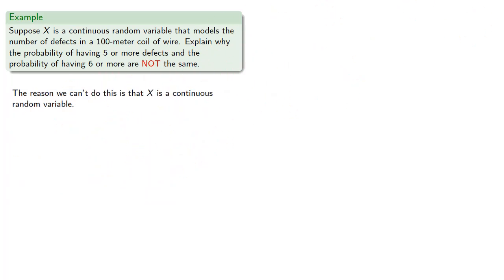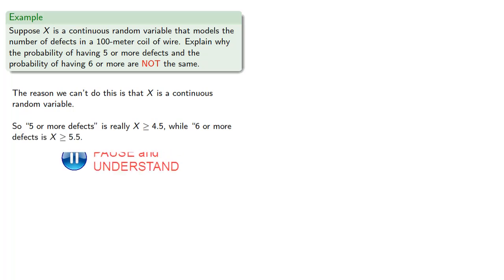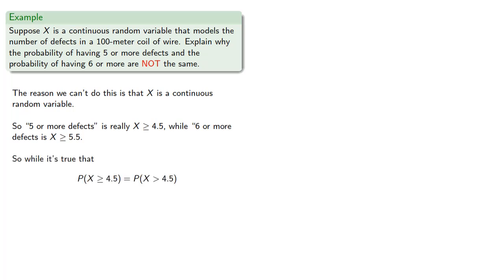The reason we can't do this is that x is a continuous random variable, so we have to look at values that round to the given count. So 5 or more defects is really x greater than or equal to 4.5, while 6 or more defects is x greater than or equal to 5.5. While it's true that the probability x is greater than or equal to 4.5 equals the probability x is strictly greater than 4.5, we can't get from there to the other probability. So our two probabilities are not the same.